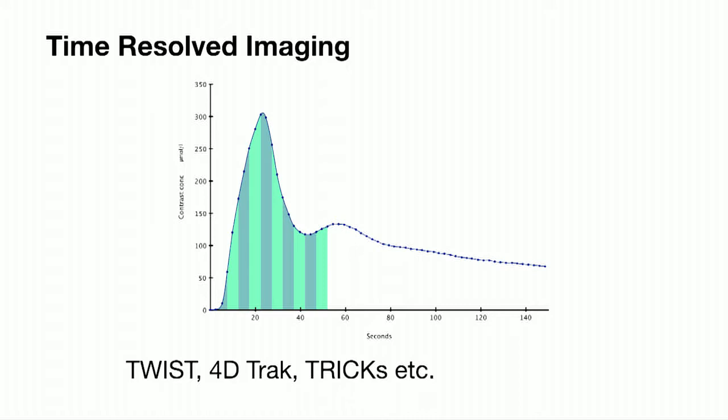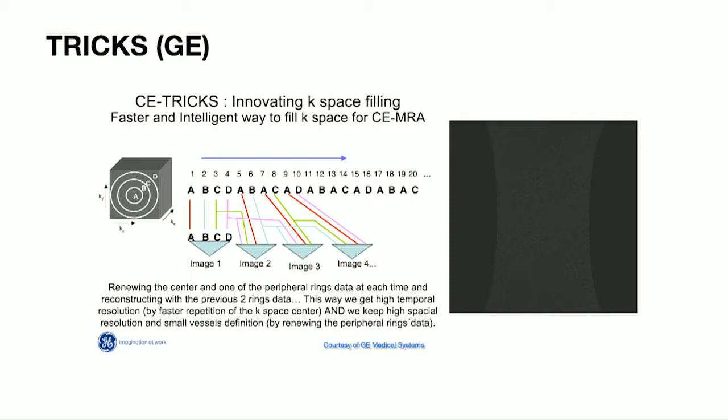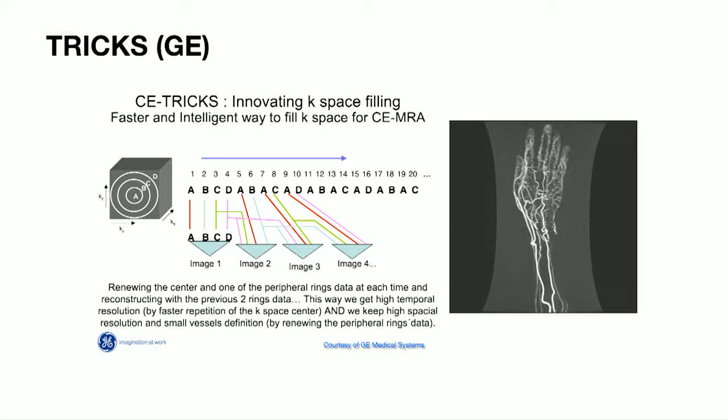GE came to market with TRIX — one of the first iterations of this — with a different schema for sampling the K-space edge and putting it all back together. They all give roughly the same result. This is a GE example with a forearm examination showing beautiful arterial and then the venous component at the end, so we can always frame out a particular arterial part.